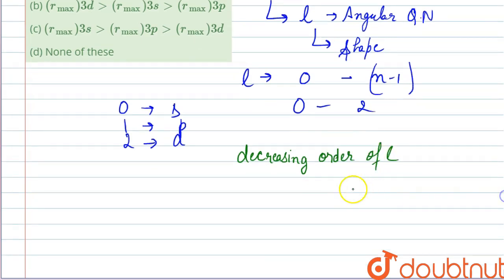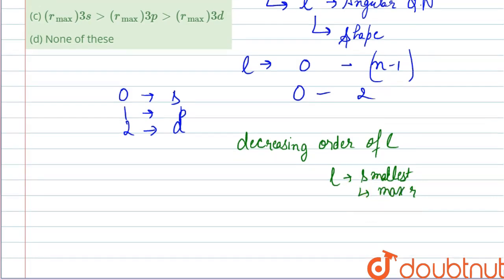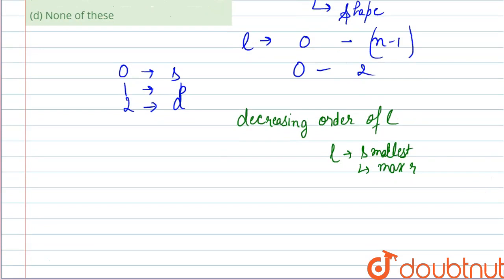It means the value of l will be smallest and maximum will be the radius of probability maximum. Now in this case, we have the smallest value of l is s, so the order will be s will have the maximum probability, then p, and then d.